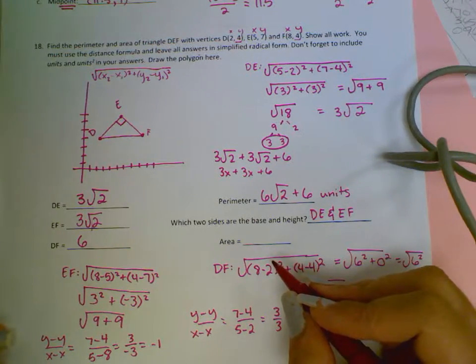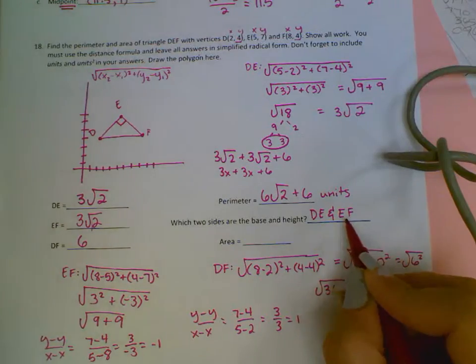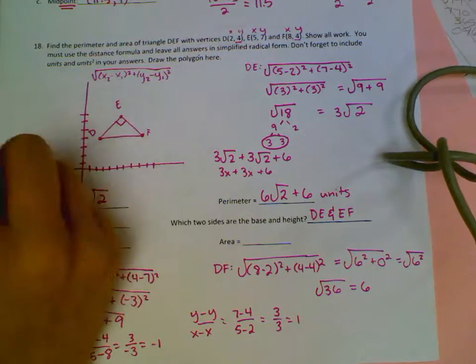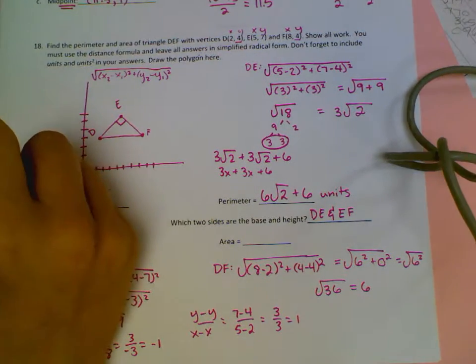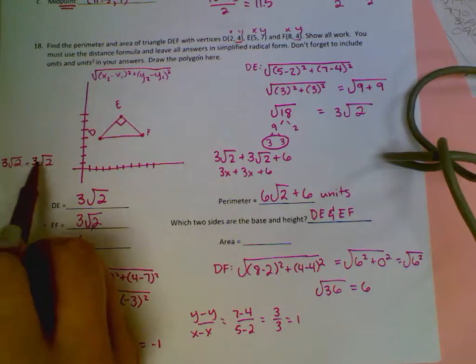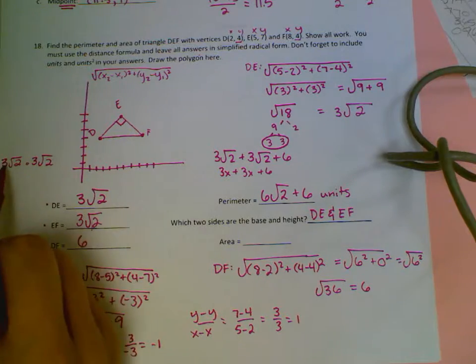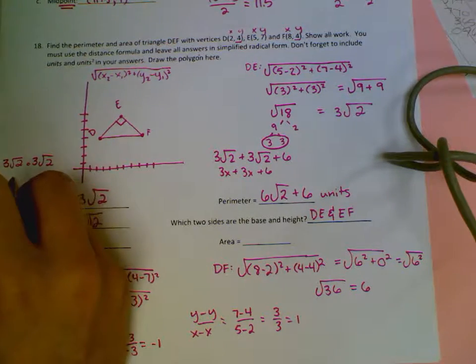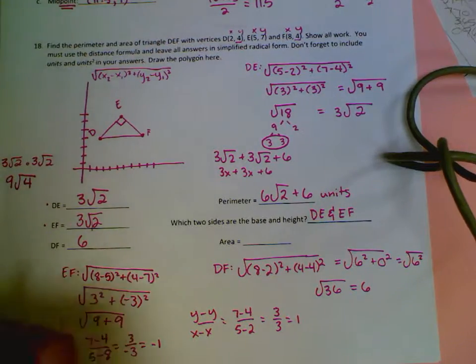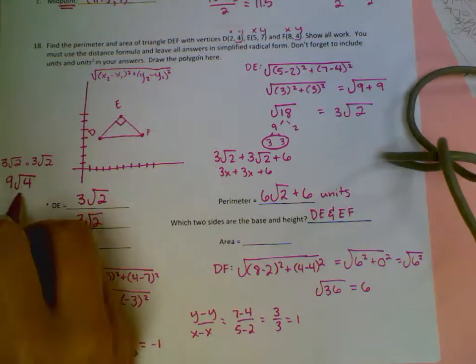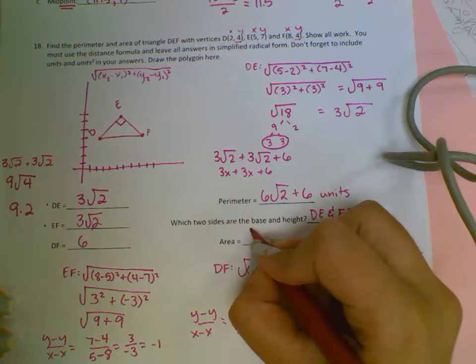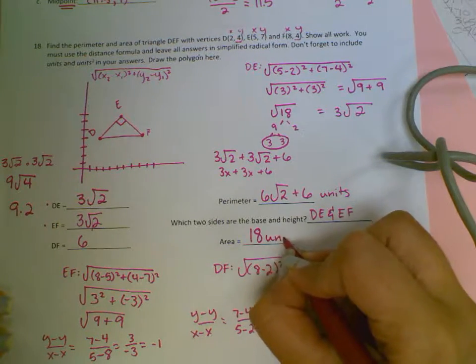The area, we're going to multiply DE and EF together. So that's going to be this one and this one. If I do 3 root 2 times 3 root 2, I can multiply what's under the radical together and I can multiply what's outside together. So 3 times 3 will give me 9. Square root of 2 times 2, which is 4. We know that the square root of 4 is 2 because 2 times 2 gives us 4. So this is the same as saying 9 times 2, which is going to give us 18 units squared.